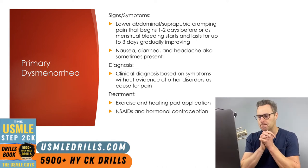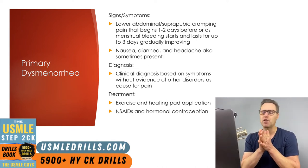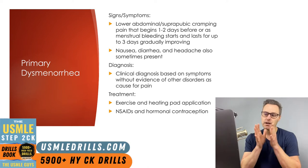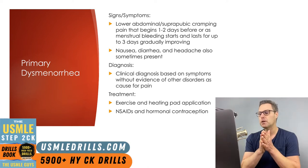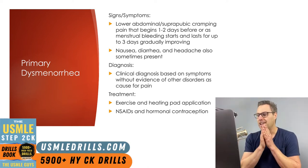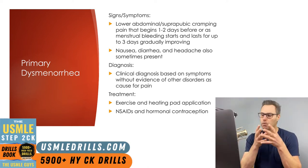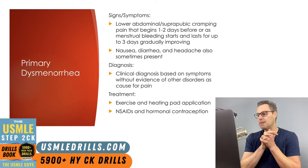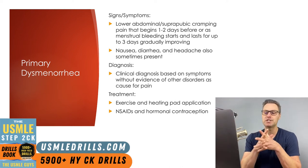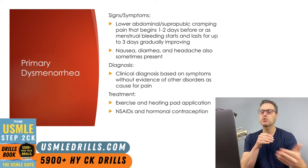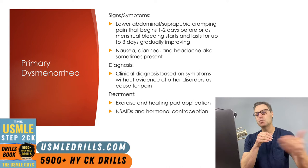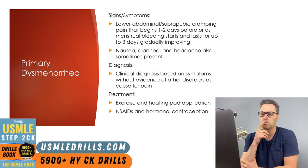Primary dysmenorrhea is caused by excessive levels of prostaglandins from the endometrium, causing uterine contraction. This is a normal physiologic type of dysmenorrhea and will typically be worse in younger patients and tends to improve with age as well as following childbirth.